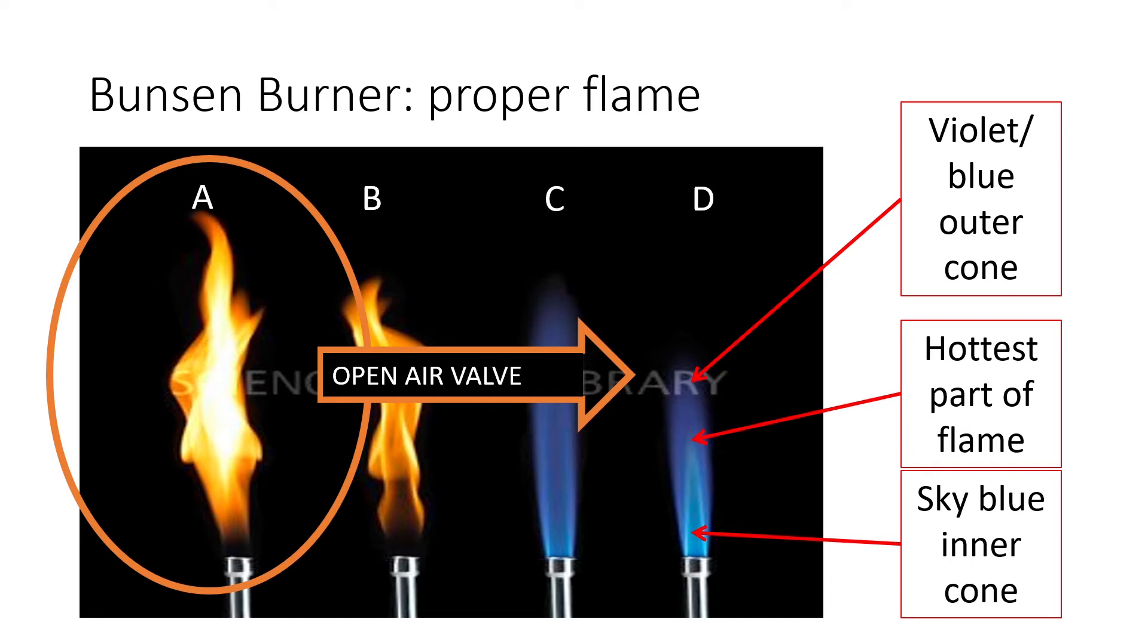Whenever they tell you to use high heat or intense heat, what that means is that you want the object to be heated to be in contact with that hottest part of the flame, the tip of the sky blue inner cone.